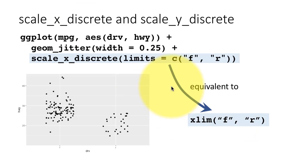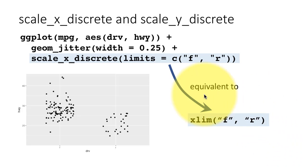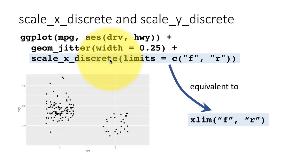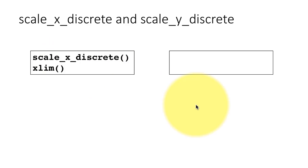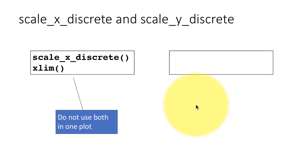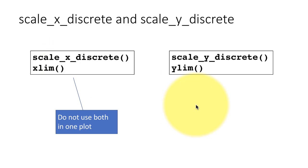You may ask why you need two different functions to do the same thing. If you're controlling only the limits on the axis, then xlim is fine. But if you want to control other things about the axis, then you have to use scale_x_discrete. We'll see examples of what other things we can control on the axis. Similarly, you have the corresponding functions to control limits on the y-axis.